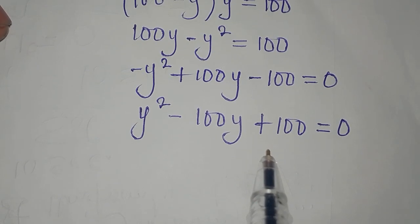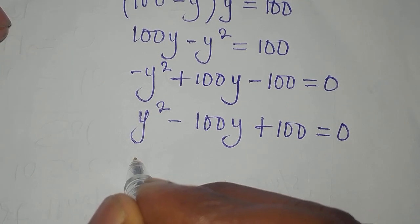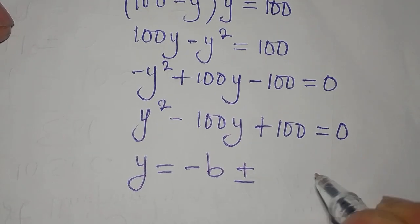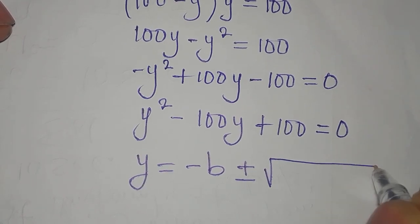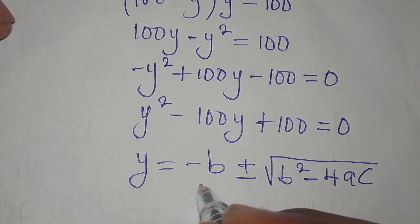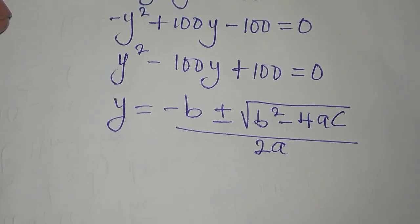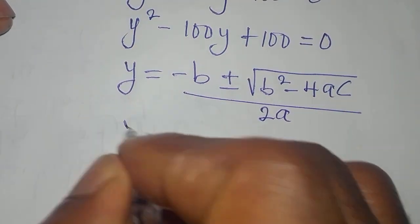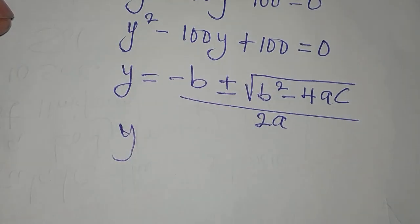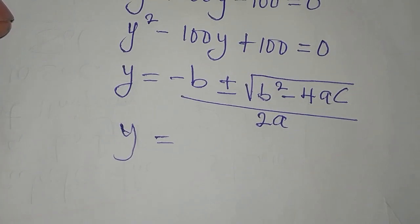We can use the quadratic formula. Our formula is y equals minus b plus or minus the square root of b squared minus 4ac, all over 2a. So our y will be equal to — in place of minus b, remember that our b is minus 100, a is 1, and c is 100.